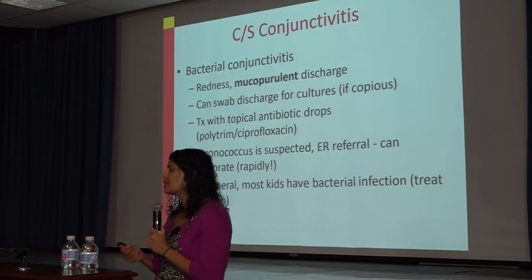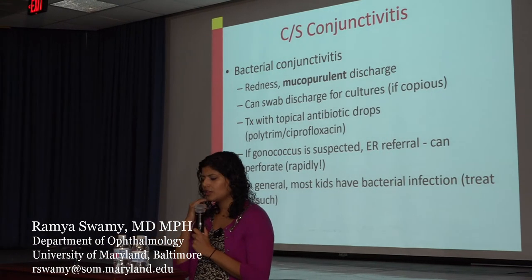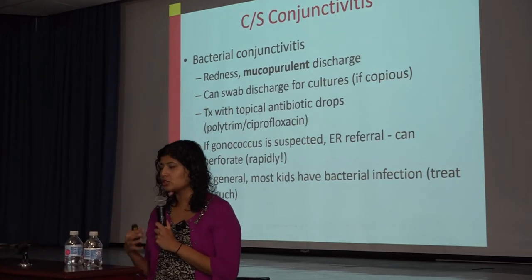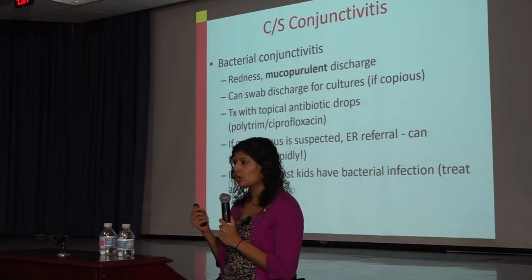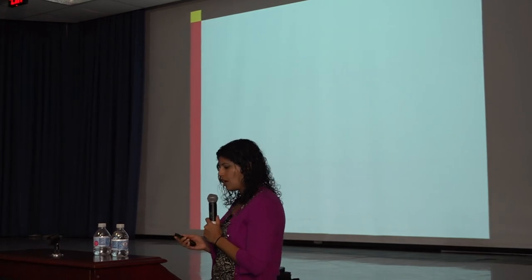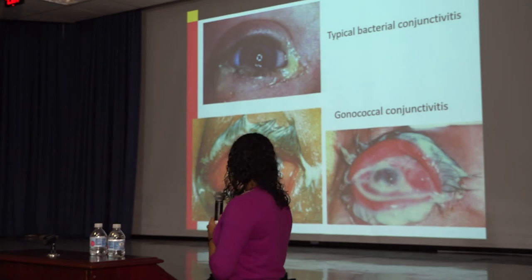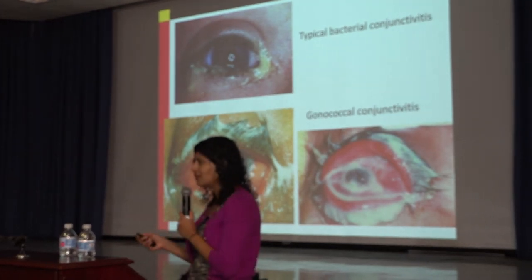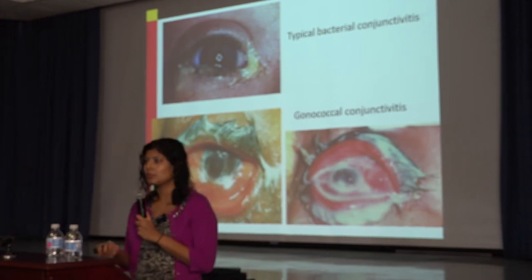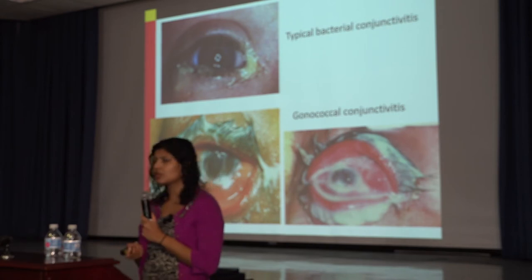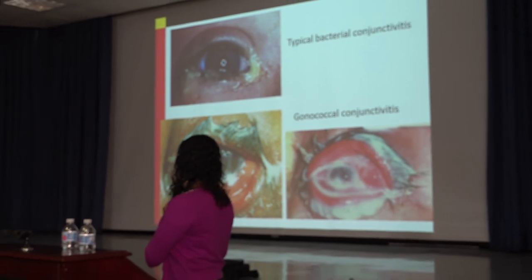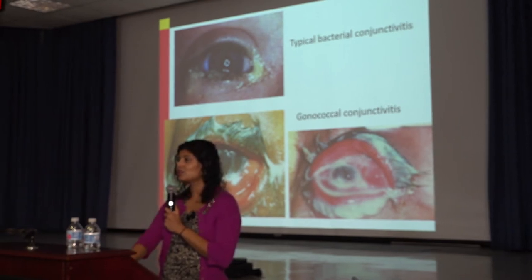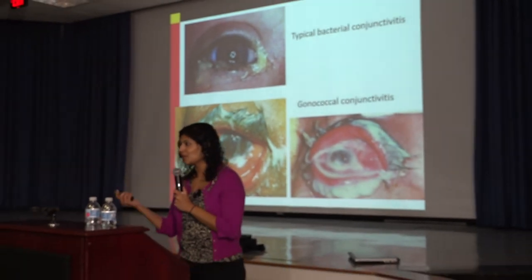Bacterial conjunctivitis looks different from viral: there's mucopurulent discharge, the eye is red and injected, and you can swab for culture if uncertain. You can prescribe topical antibiotic drops — polytrim or a fluoroquinolone eye drop provides good broad coverage. The bottom pictures show gonococcal conjunctivitis, which is much more serious as it can lead to perforation of the eye. Anything resembling those pictures should be sent to the emergency room immediately.